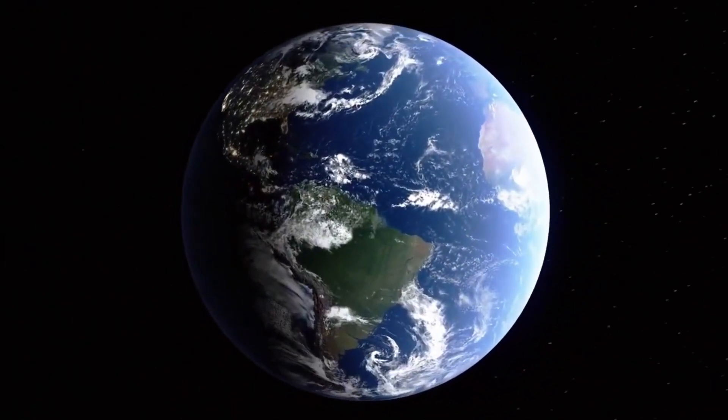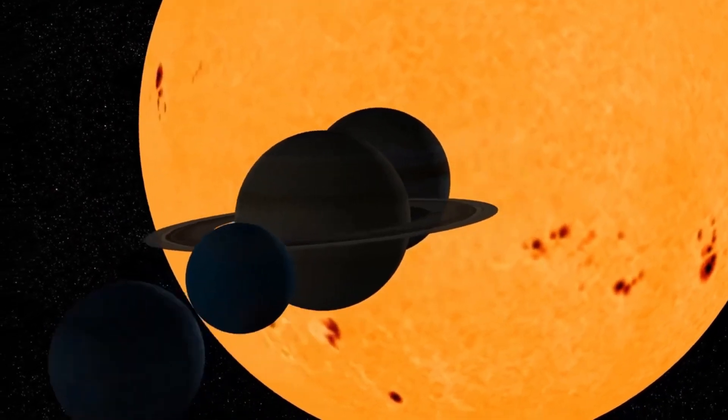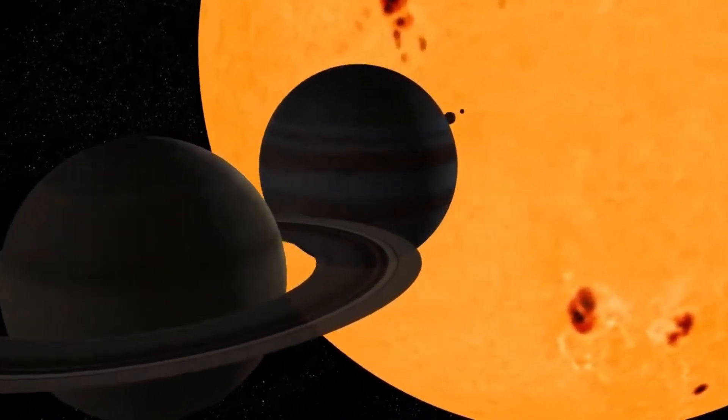If we aim for Neptune, one of the most distant planets in our solar system, the trip would last an unimaginable 4,400 years. These figures emphasize the sheer scale of our solar system.